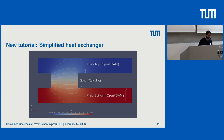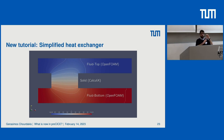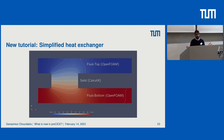In contrast to the heat exchanger tutorial we already had, this new one is much easier to run because the mesh is much coarser. It uses a multi-implicit coupling scheme with three participants instead of composing two serial explicit schemes, and it is a transient simulation instead of a stationary one.